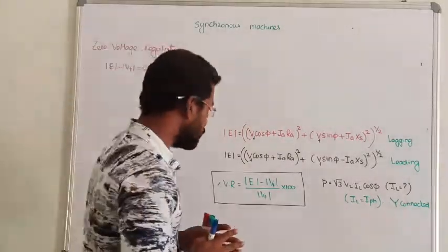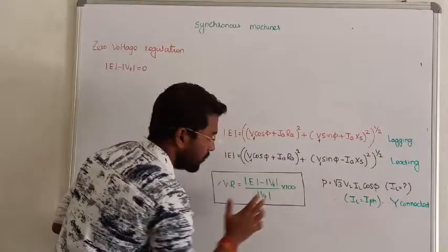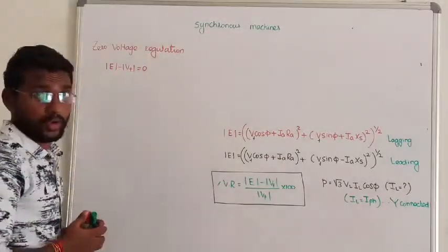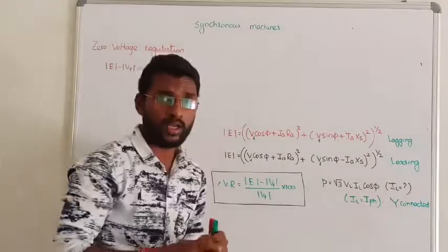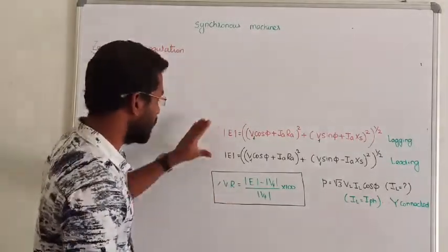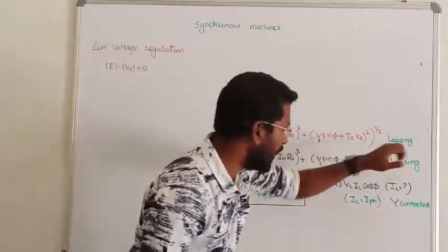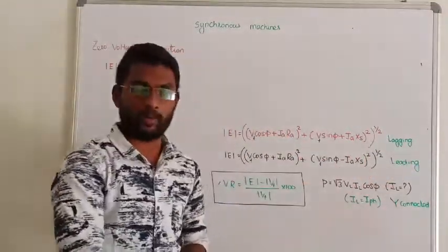Zero voltage regulation. In voltage regulation, when the numerator term is zero, the voltage regulation is zero. Then E minus V_t equals zero. That is zero voltage regulation. See that the equation of regulation is already fixed - one is for lagging power factor, another one is for leading power factor.